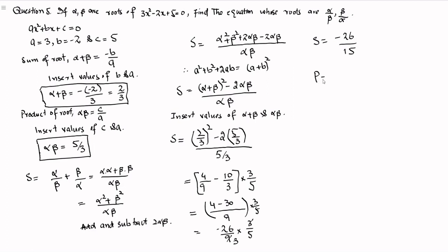The product of the roots of the required quadratic equation is alpha by beta multiplied by beta by alpha. Alpha cancels with alpha and beta cancels with beta, so the product of the roots equals 1. When the sum and product of the roots are given, the required quadratic equation is x squared minus Sx plus P is equal to 0.